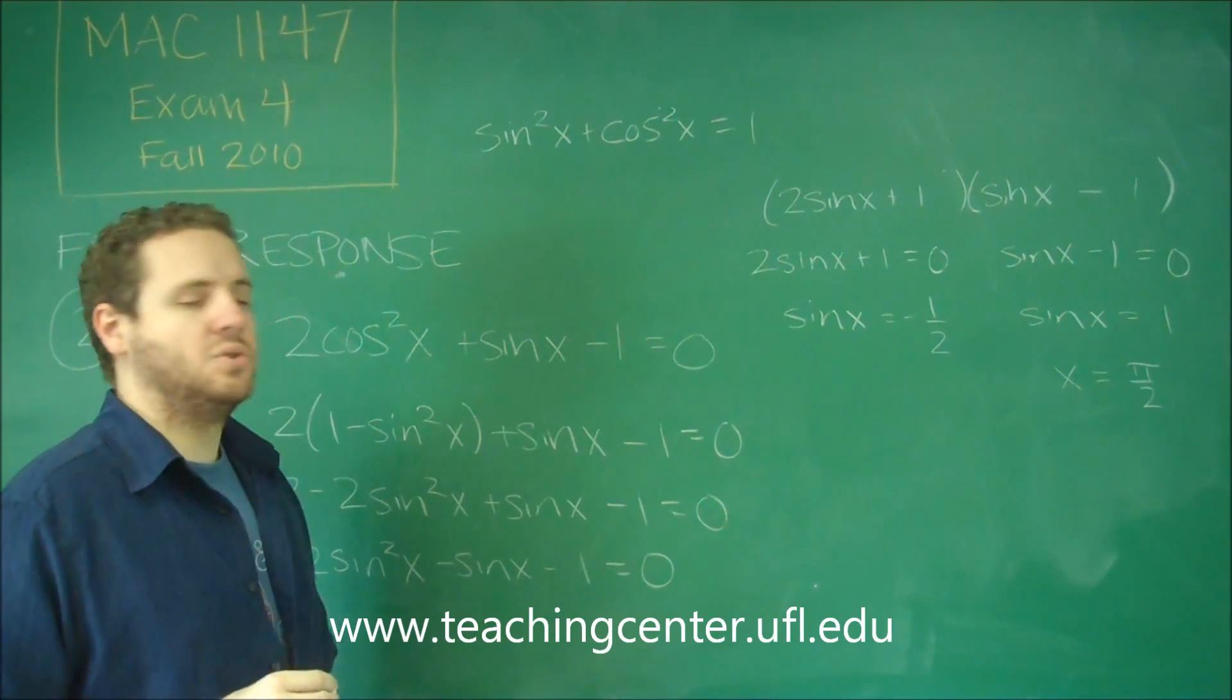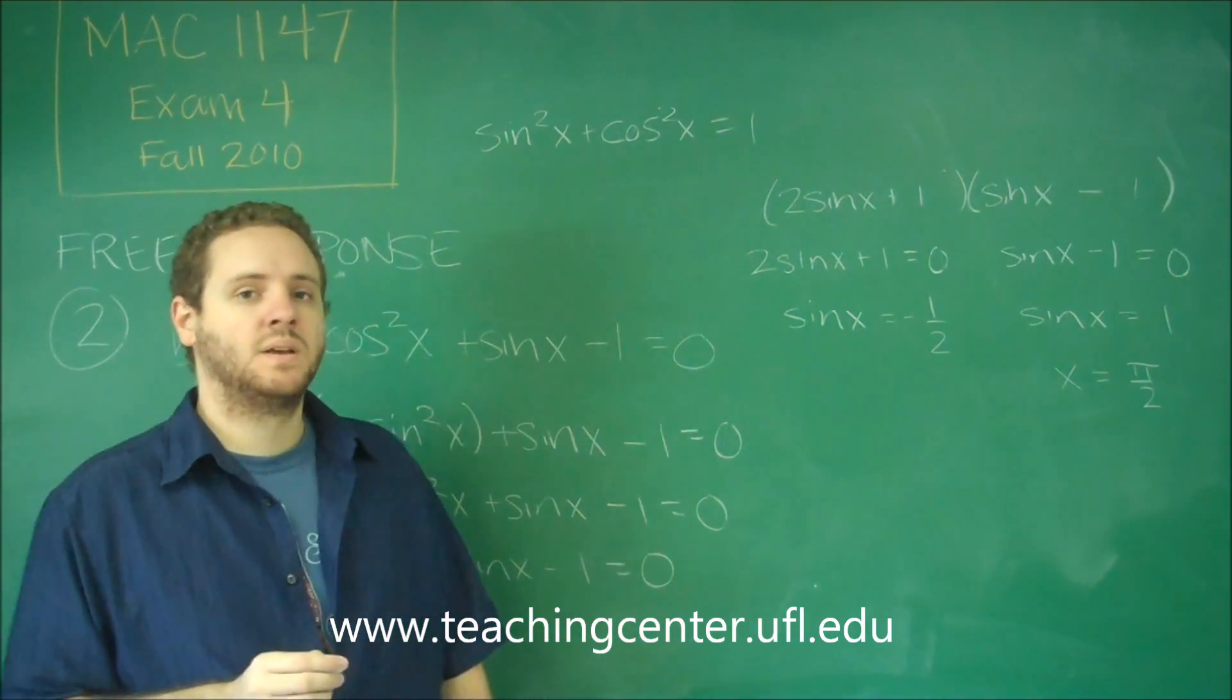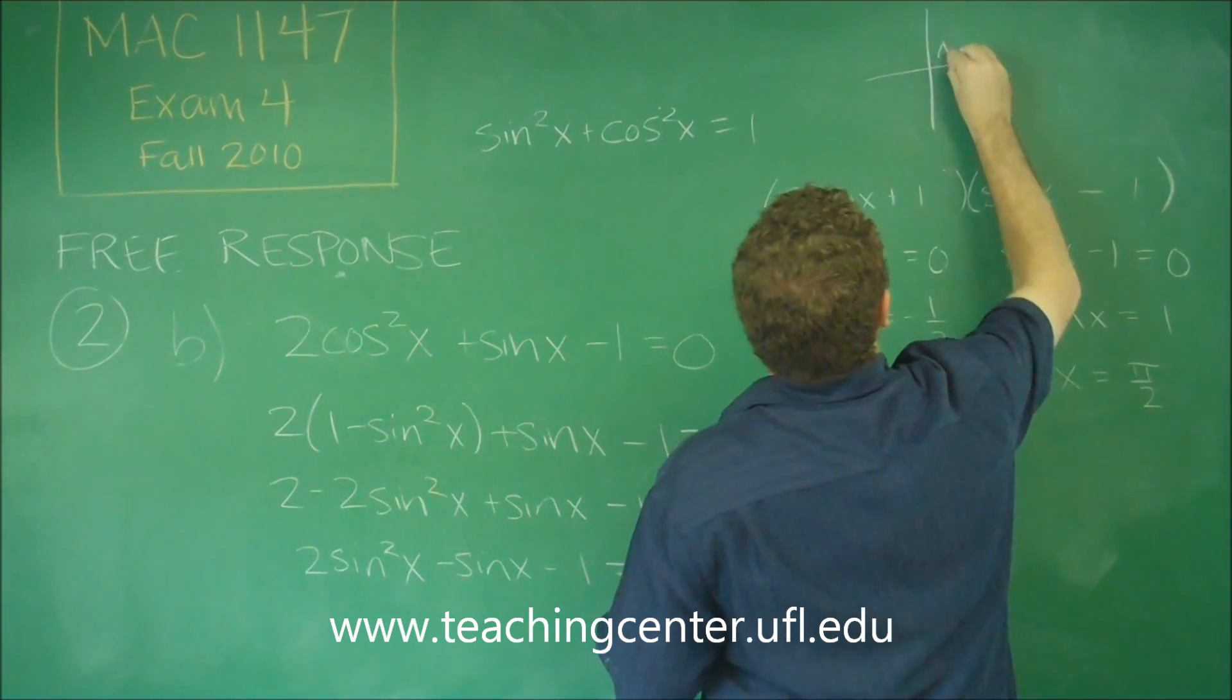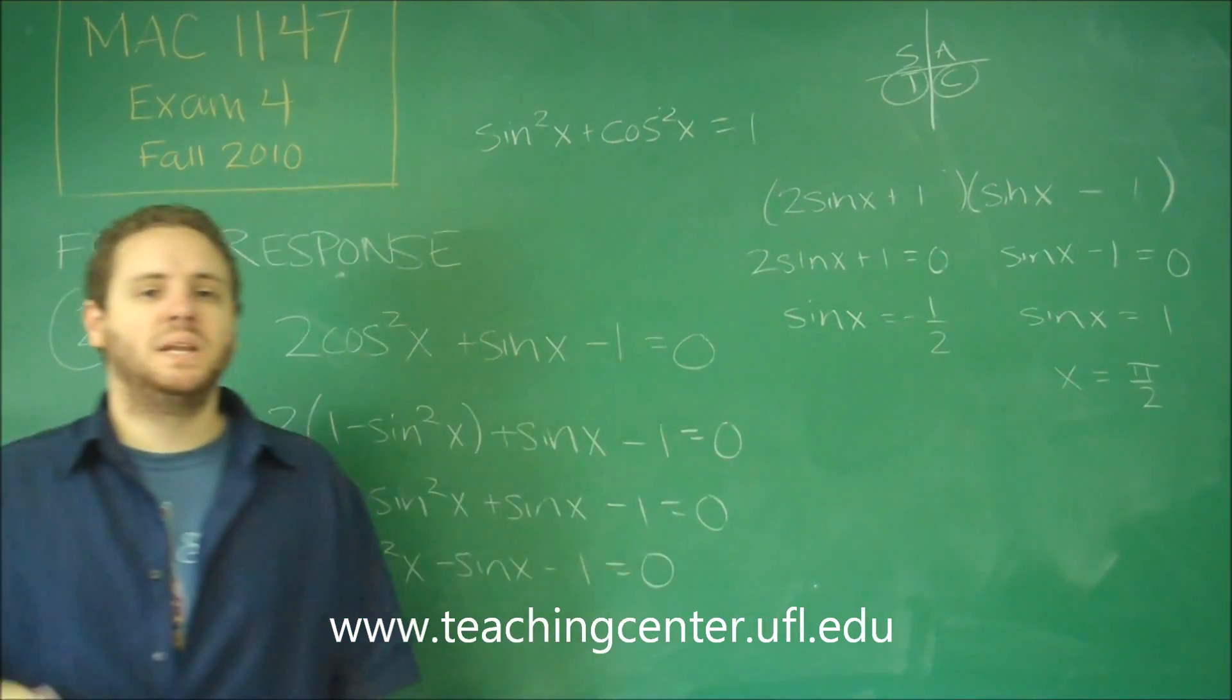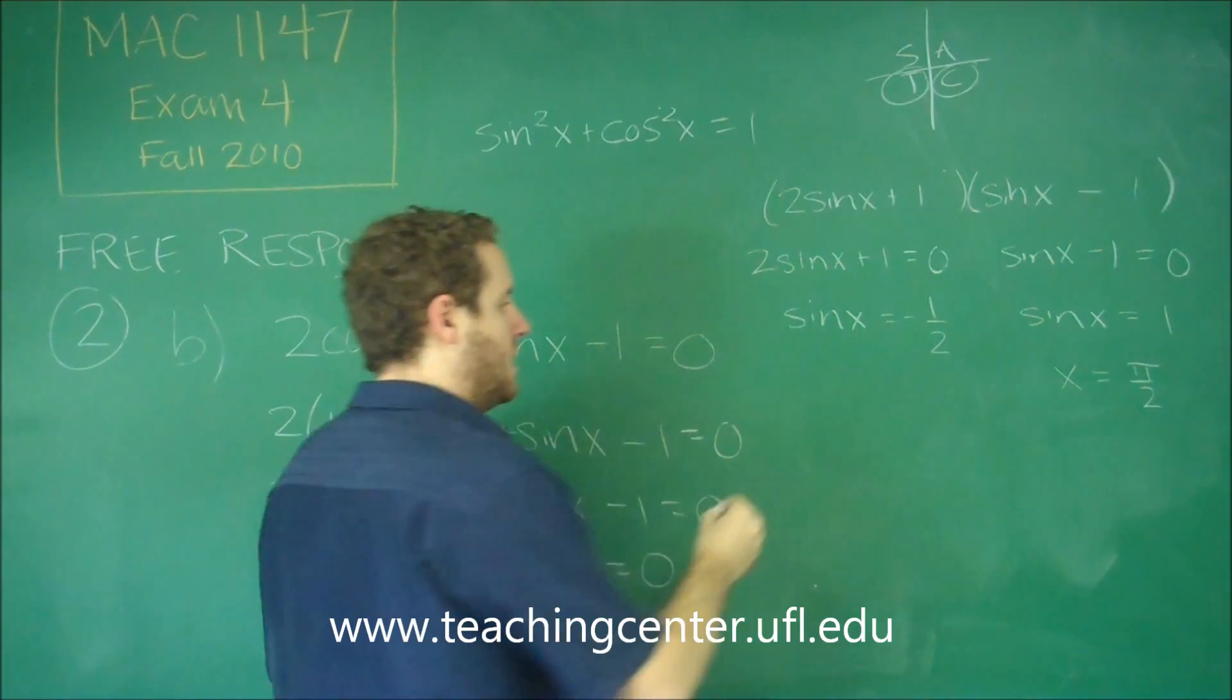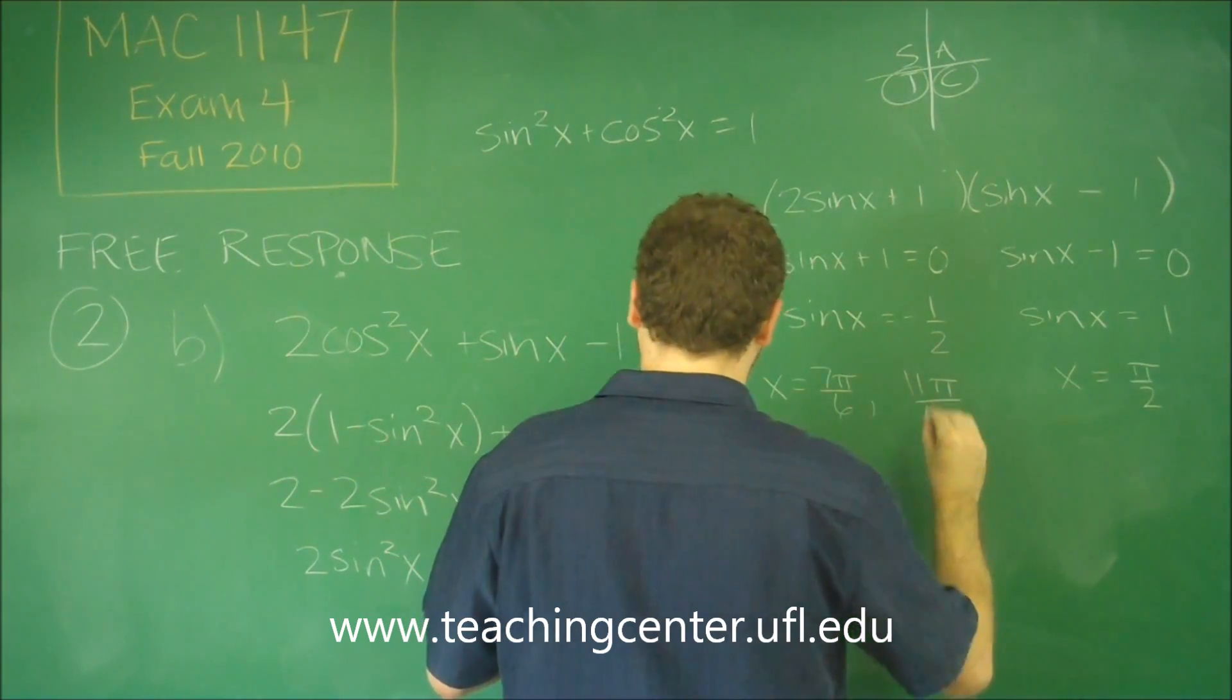Where is sine x equal to negative 1 half? Well the reference angle, sine x equals 1 half would be pi over 6. But since it's negative, that's third and fourth quadrants for sine. So we need pi over 6 written in those two quadrants. So that's going to be 7 pi over 6, 11 pi over 6.